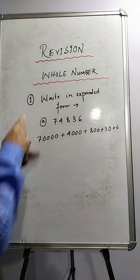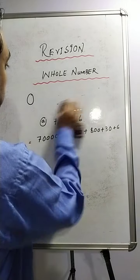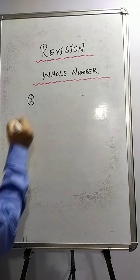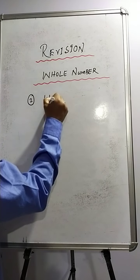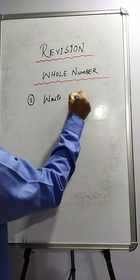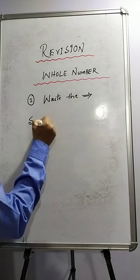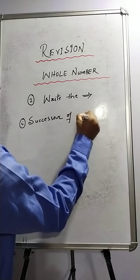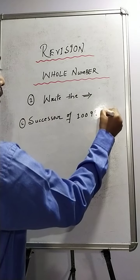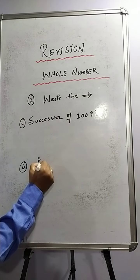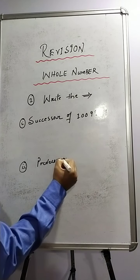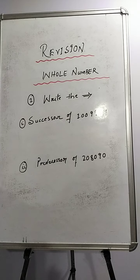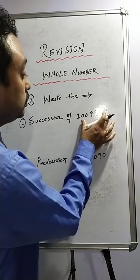Now let's move on to sum number 2. In sum number 2 we have to write the successor and the predecessor. Part 1: write the successor of 1,00,09,999. Part 2: write the predecessor of 2,08,090. When we talk about successor, it means we have to add plus 1 to the given number.